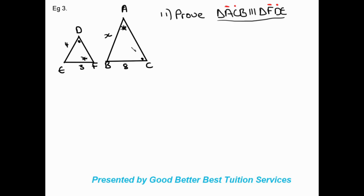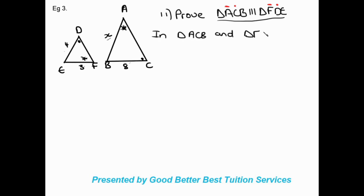We have to prove these two triangles are similar. They give us two angles in both triangles. Starting as always: in triangle ACB and triangle FDE. Angle A is equal to angle F — reason: given, they both have the star marker. Angle C is equal to angle D — reason: given.